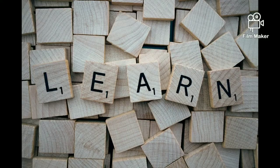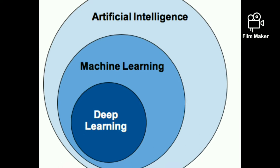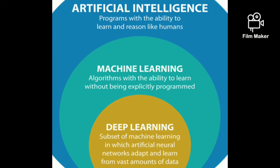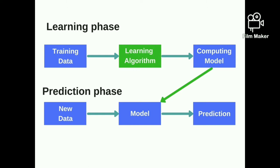Machine learning is a field of study that gives computers the capability to learn without being explicitly programmed. As evident from the name, it gives the computer the ability to learn, making it more similar to humans. Artificial intelligence is the broad science of mimicking human abilities, and machine learning is a specific subset of AI that trains a machine how to learn.